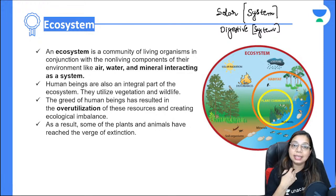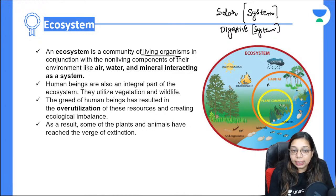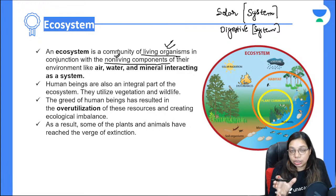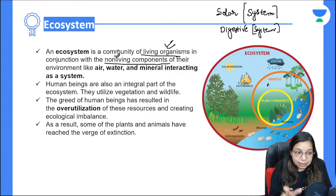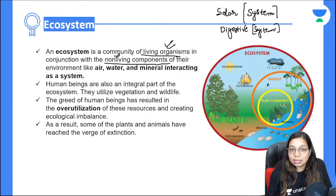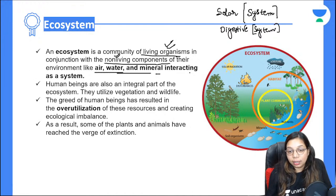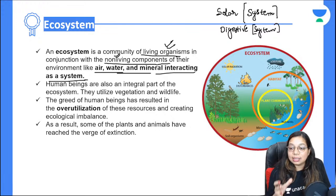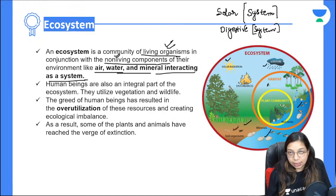An ecosystem is a community of living organisms in conjunction with the non-living components of the environment — like air, water, and minerals — interacting as a system. Solar radiation, water, lithosphere, hydrosphere — everything is part of this system. We cannot survive alone as living organisms, and non-living components are also useless without living organisms.